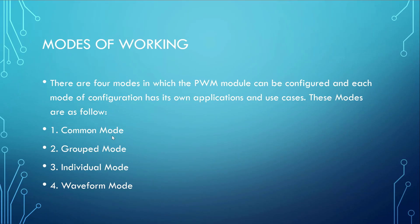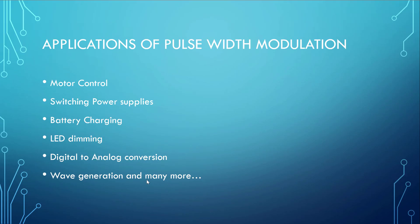There are four modes of operation for the PWM module: common, grouped, individual, and waveform. Each mode has its own applications and use cases — you don't need all modes simultaneously. We will cover how to configure and program each mode in later tutorials.